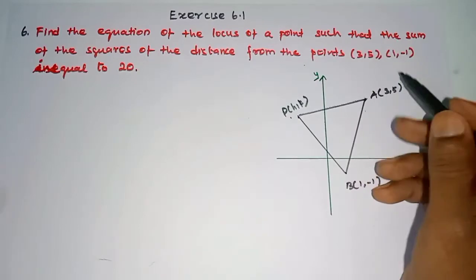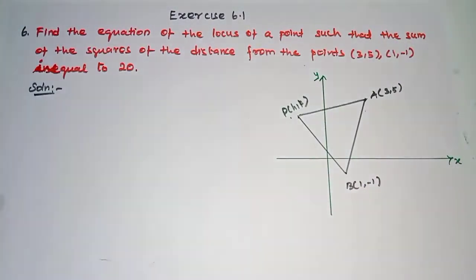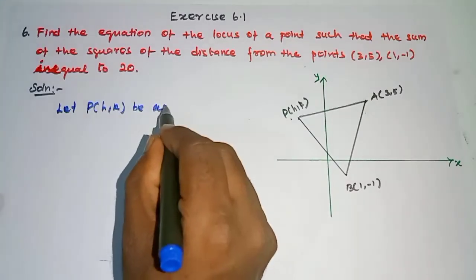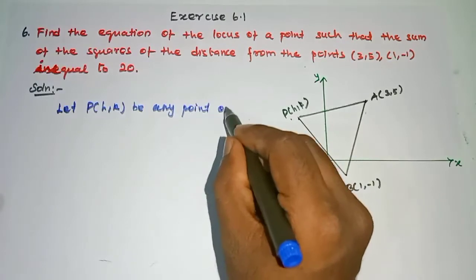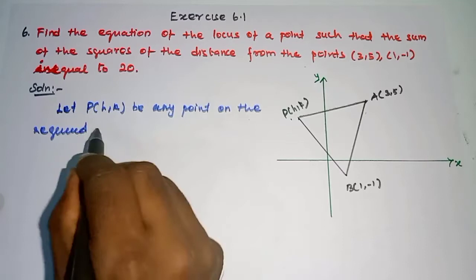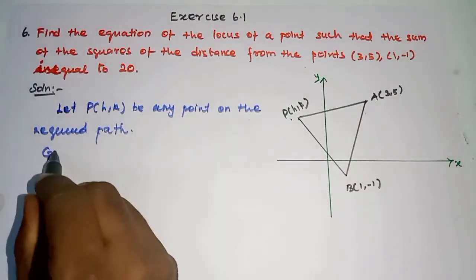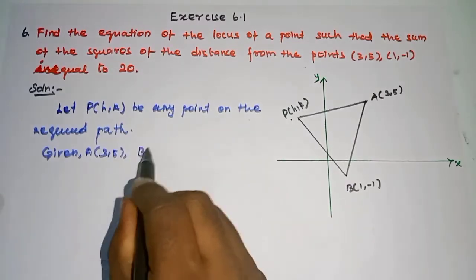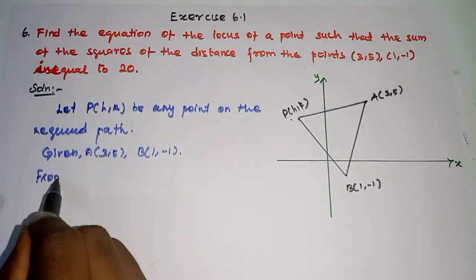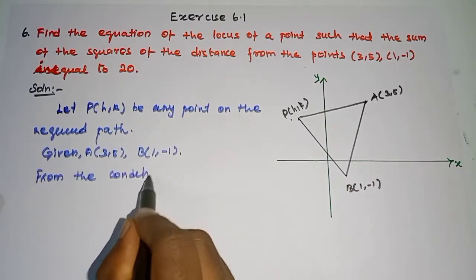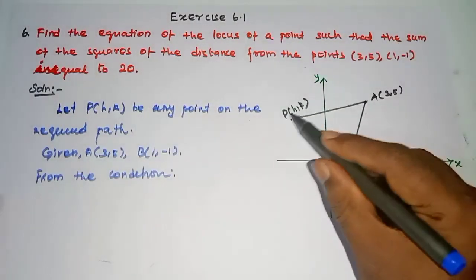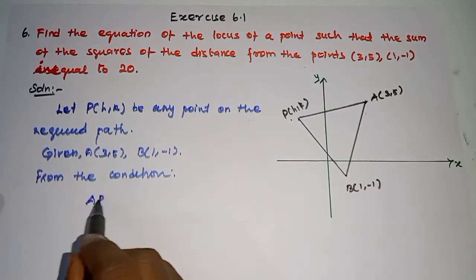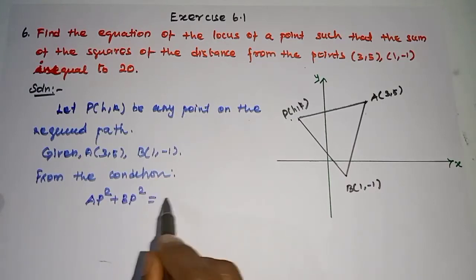From these two end points, see the solution. Now first part: let P(h, k) be any point on the required locus. Given two points: A is (3, 5) and B is (1, -1). From the condition, what we have to do is add the square of AP and the square of BP equal to 20. So AP² + BP² is equal to 20.